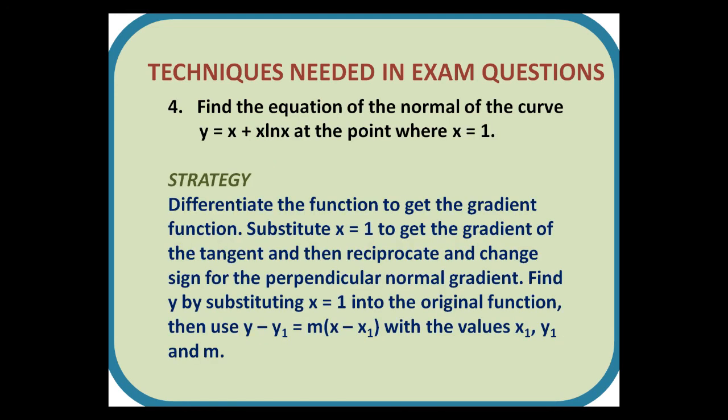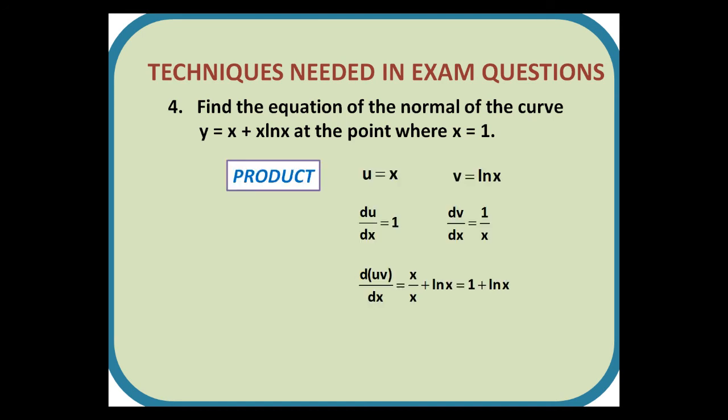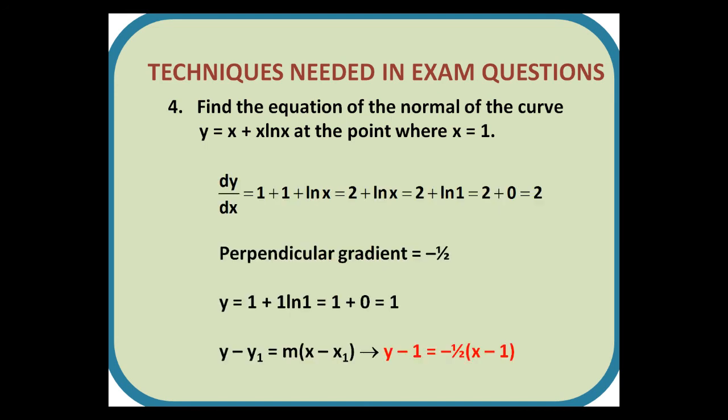Number 4. Find the equation of the normal of the curve y equals x plus x ln x at the point where x equals 1. Strategy: Differentiate the function to get the gradient function. Substitute x equals 1 to get the gradient of the tangent, and then reciprocate and change sign for the perpendicular normal gradient. Find y by substituting x equals 1 into the original function, then use y minus y1 is m times x minus x1, with the values x1, y1 and m. Differentiating x ln x using the product rule gives us x over x plus ln x, which simplifies to 1 plus ln x. So the differential of x plus x ln x is 1 plus 1 plus ln x, or 2 plus ln x. The gradient of the tangent when x is 1 would be 2 plus ln 1, which is 2. For the normal we need the perpendicular gradient, which is minus 1 half. y itself can be determined by substituting x equals 1 into the original curve, and then we can put the gradient and the x and y values into the formula, y minus y1 equals m times x minus x1, as shown.